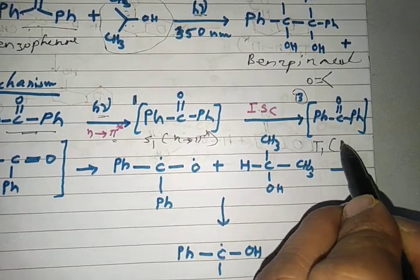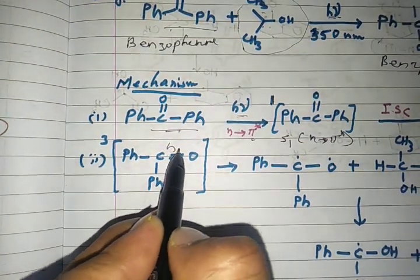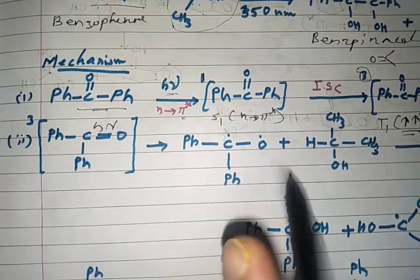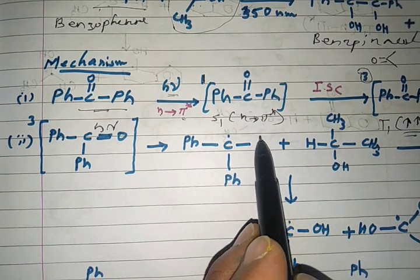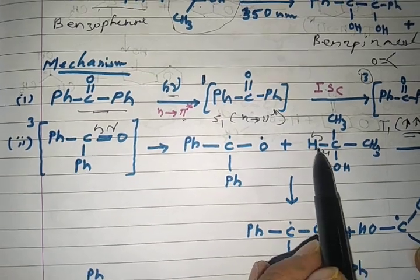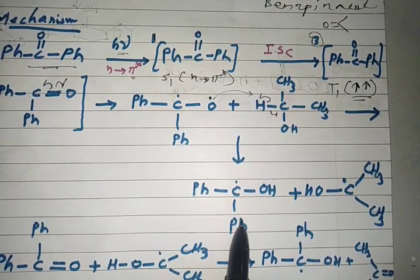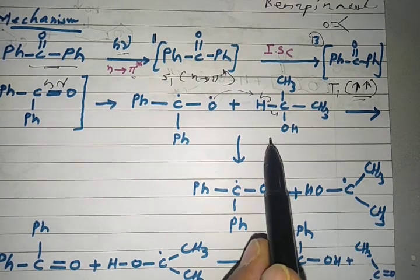Once the triplet state is formed, it undergoes homolysis to form a radical. Once this radical is formed, the oxygen abstracts hydrogen from the secondary alcohol or hydrogen donor. This abstraction takes place by the oxygen, and there is formation of the diphenyl ketyl radical, plus one more radical which forms from the secondary alcohol.